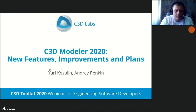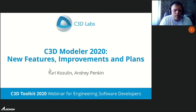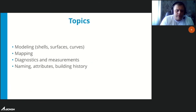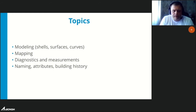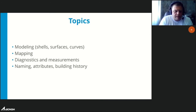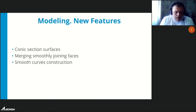We want to tell you about some new features, improvements, and plans in our modeling module. Some new features will be detailed in a later report. According to the subject of improvements, they can be divided into four parts: objects modeling, model projection, improvements in diagnostics and measurements functionality, and changes in naming of models, working with attributes, and building history.